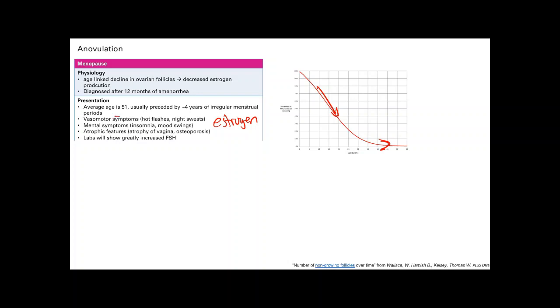And then going back to the vasomotor symptoms, how this happens is estrogen is super important in thermoregulation. So it's in the homeostatic function in the brain. So if you run out of estrogen, your homeostatic function goes all out of whack. And that's why you get those vasomotor symptoms.